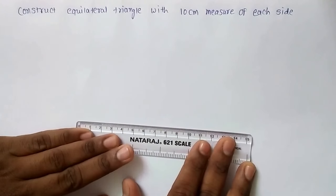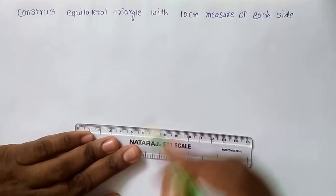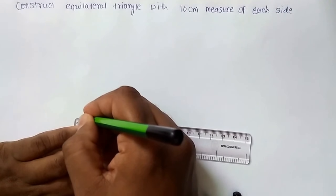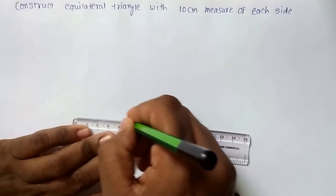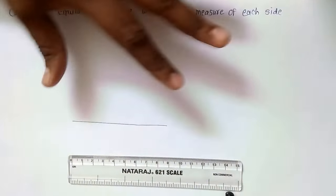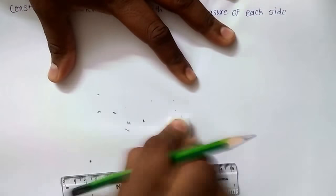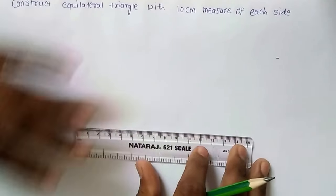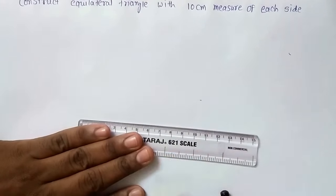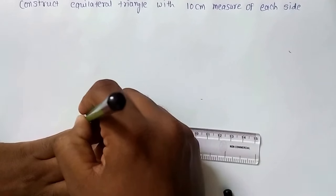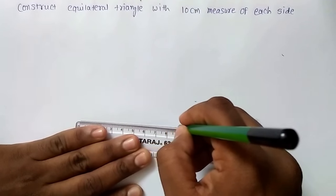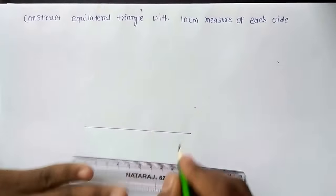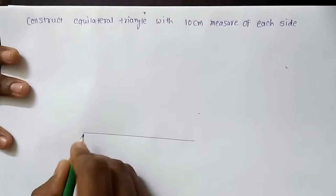I will keep scale here. And then here it is 0. So I will take 0 to... sorry, let me draw it again properly. Let us see. This is 0. And this is 10 cm. So this is base of the triangle.